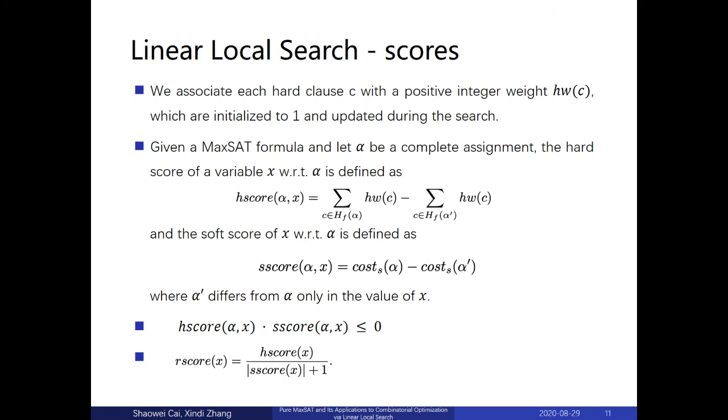In order to implement the algorithm, we need two scoring functions. One is the hard score to measure the change on the cost of hard clauses. And the other is the soft score to measure the change on the soft cost. An important fact is that hard score and soft score cannot be positive at the same time. Also, they cannot be negative at the same time. This is easy to see according to the feature of a Pure MaxSAT. And we design a ratio score, which is defined as below. In our algorithm, we use ratio score to pick variables.